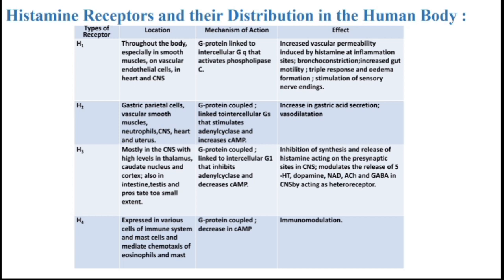H3 receptor. H3 receptors are represented mostly in the CNS, with high levels in the thalamus. Their mechanism of action is G protein coupled to intracellular Gi that inhibits adenylyl cyclase and decreases cAMP. It acts by inhibition of the synthesis and release of histamine acting on presynaptic sites. H4 receptor is expressed in various cells of the immune system and mast cells, acting via G protein-coupled decrease in cAMP, affecting the body by immunomodulation.